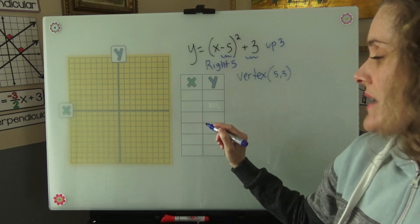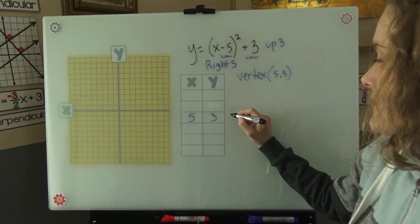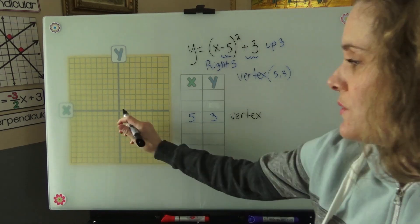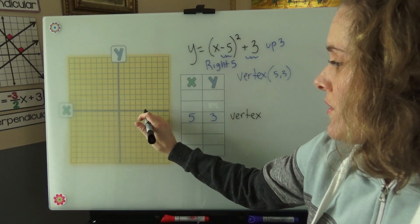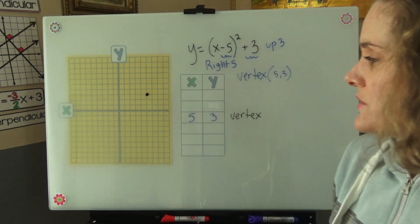And I'm just going to put that in the middle of the table. And I'll label it vertex. 1, 1, 2, 3, 4, 5, 1, 2, 3. There's our vertex.